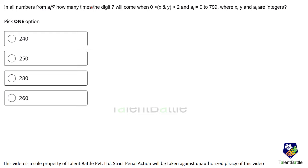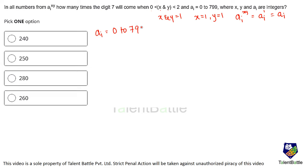Fourth problem: in all numbers from ai raised to xy, how many times does digit 7 appear, when x and y lie between 0 and 2, and ai ranges from 0 to 799? Since x and y lie strictly between 0 and 2, both equal 1, so ai raised to xy equals ai raised to 1, which is just ai. So we need to count how many times digit 7 appears in numbers from 0 to 799.